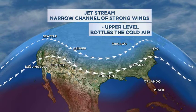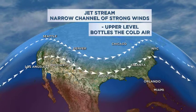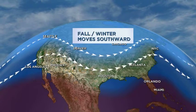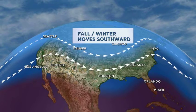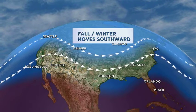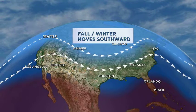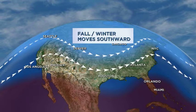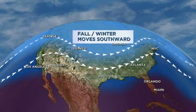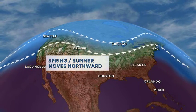The jet stream keeps all the cold air pretty much bottled up together. In the fall and in the winter, the jet stream tends to be focused at a lower latitude, bringing those cold spells — which we hardly saw this last winter across most of the United States.